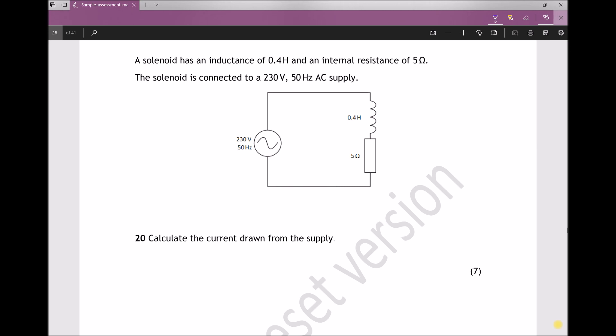Now in order to solve this question, we first of all need to find the reactance of our 0.4 Henry inductor, and then we need to find the total impedance in the circuit. Once we have the total impedance, we can then calculate the current.